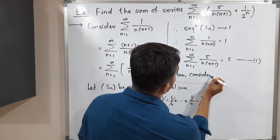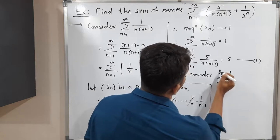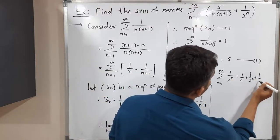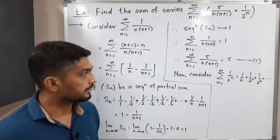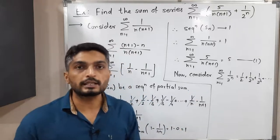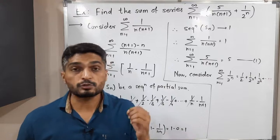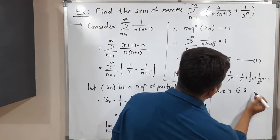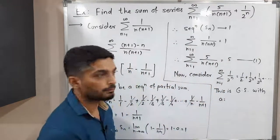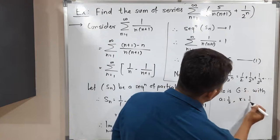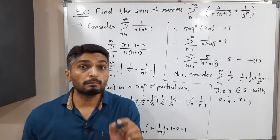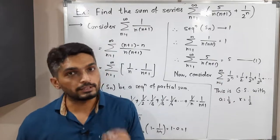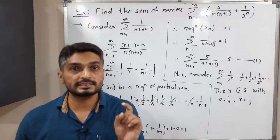Now consider the second series: summation of 1/(2^n), n running from 1 to infinity. Expanding this by putting n = 1, 2, 3, and so on, you can see that if you multiply the first term by 1/2 you get the second term, and multiplying the second term by 1/2 gives the third term, and so on. That means it is a geometric series with first term a = 1/2 and common ratio r = 1/2.